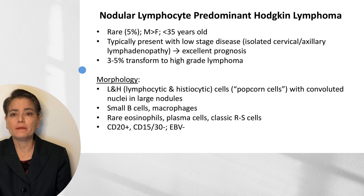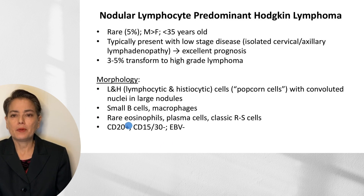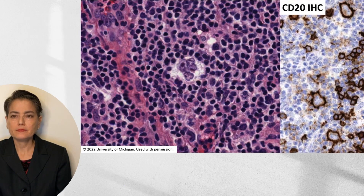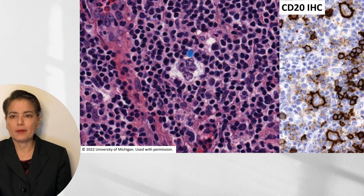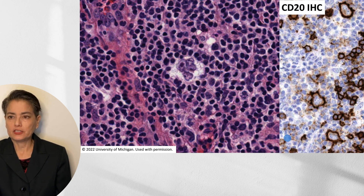The LNH cells are negative for CD15 and CD30 but positive for CD20. There are very rare eosinophils and plasma cells; most of the background cells are lymphocytes. These cases are typically Epstein-Barr virus negative. Here is a nice example of a popcorn cell — it actually looks like a piece of popcorn, with the convoluted nucleus representing the exploded kernel. Large cells positive for CD20 are confirmed on immunostain, with some scattered small B cells around as well.